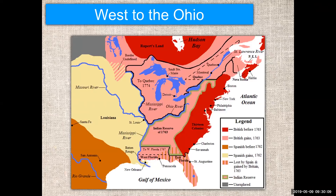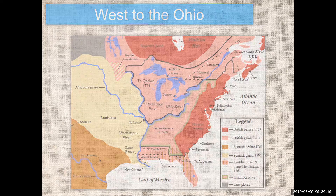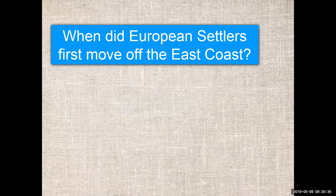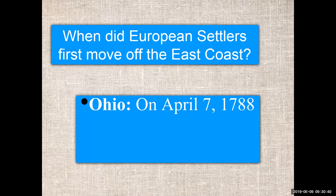They moved off the East Coast to Ohio on April 7, 1788. Before that date, there were no colonists who lived in Ohio. Look at your genealogy and see if you have family born in Ohio before 1788, then do some history to figure out who they were. If they were French — maybe. If they were Native Americans — perhaps. Kentucky was settled in 1774.